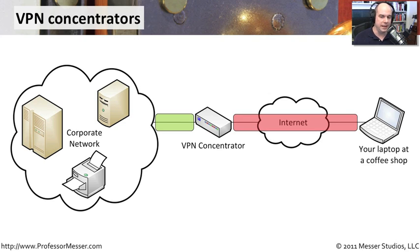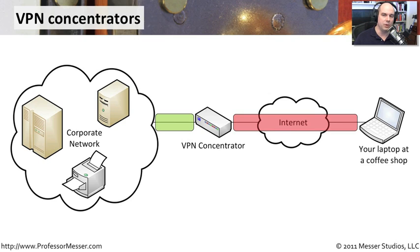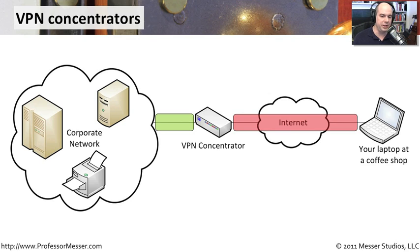The way these concentrators work is: out there on the internet, you may be at a coffee shop or a hotspot somewhere, and you want to be able to communicate to your corporate or home network, but you don't want people on the internet to see what's going on. In steps the VPN concentrator. By using some software in your operating system or on your machine, you're able to create an encrypted tunnel through the internet to the VPN concentrator.